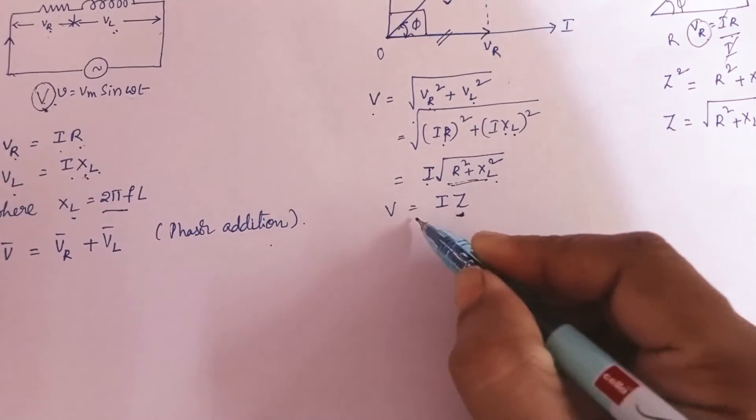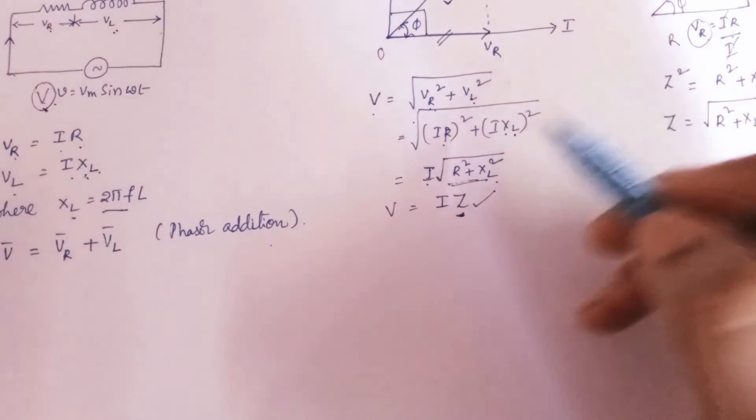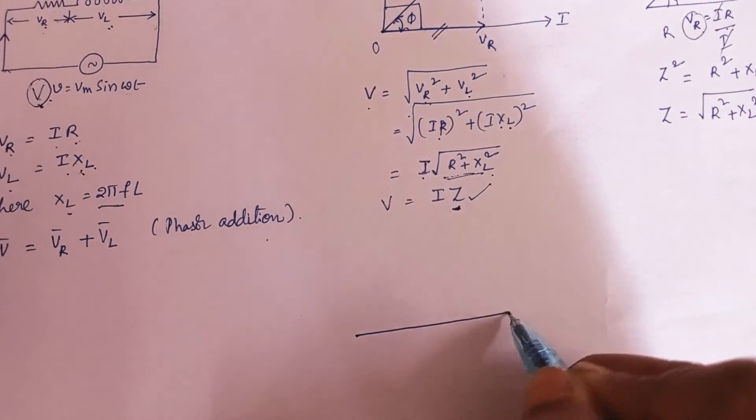So this relation can be reflected here. So V equal to IZ we may write. So this is the voltage triangle. Let me consider the voltage triangle again.